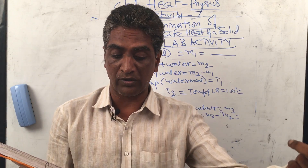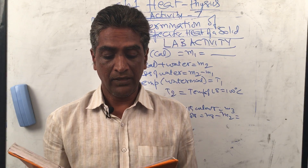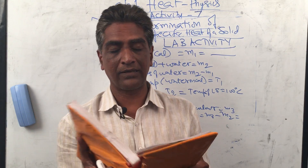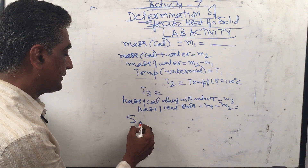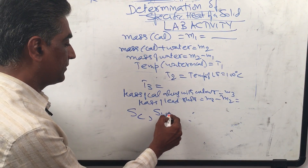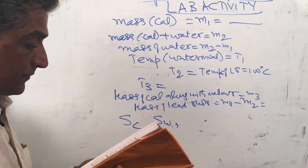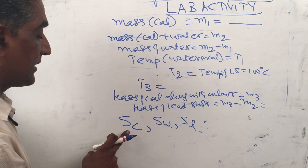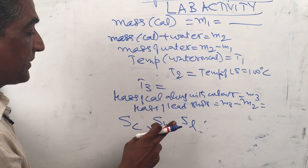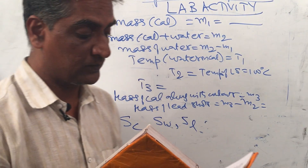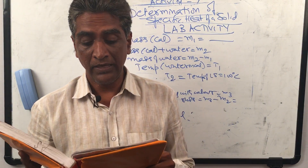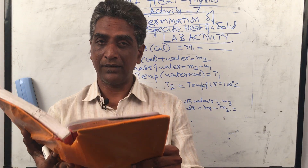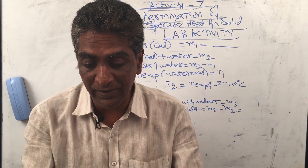Let the specific heats of the calorimeter, lead shots, and water be SC, SL, and SW respectively. According to the method of mixtures, heat lost by the solid equals heat gained by the calorimeter plus heat gained by the water.